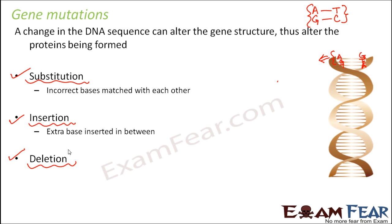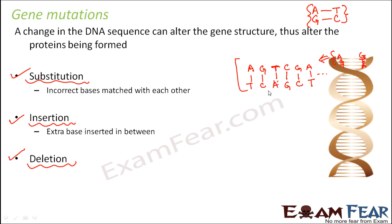In insertion, an extra base is inserted in between the sequence. Let us suppose you have a particular sequence and you add an extra T in between C and A. Now one side has more bases and the other has fewer, creating issues in pairing. Perhaps G will pair up with C after that T, but then who will pair with G? This creates an entirely new sequence — the entire sequence gets altered due to the extra base being inserted, which in turn affects protein synthesis.